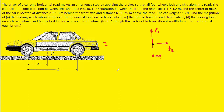Newton tells us the net force acting on the car equals its mass times acceleration. The normal force and gravitational force cancel each other out — they are equal in magnitude — because the car is not accelerating in the upward or downward direction. So the net force acting on the car is going to be the kinetic frictional force.